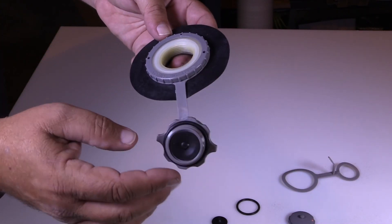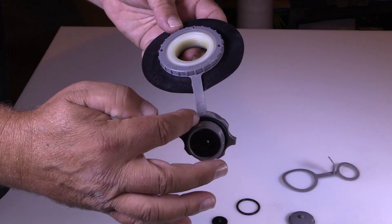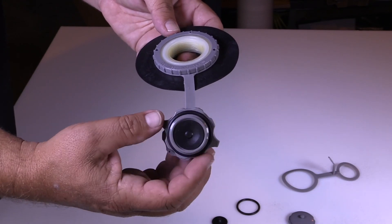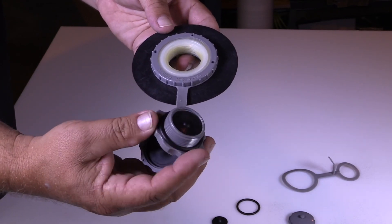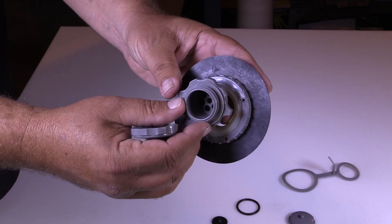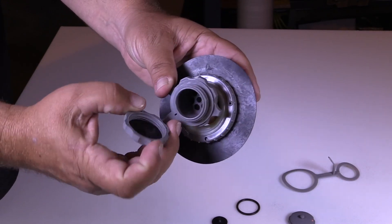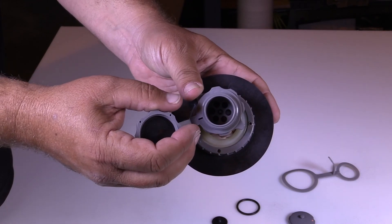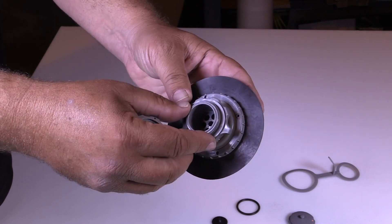You can put Vaseline or petroleum jelly on the O-rings to keep them soft. But other than that, it's all plastic and rubber so there's no corrosive parts to go bad in the salt water and corrode.